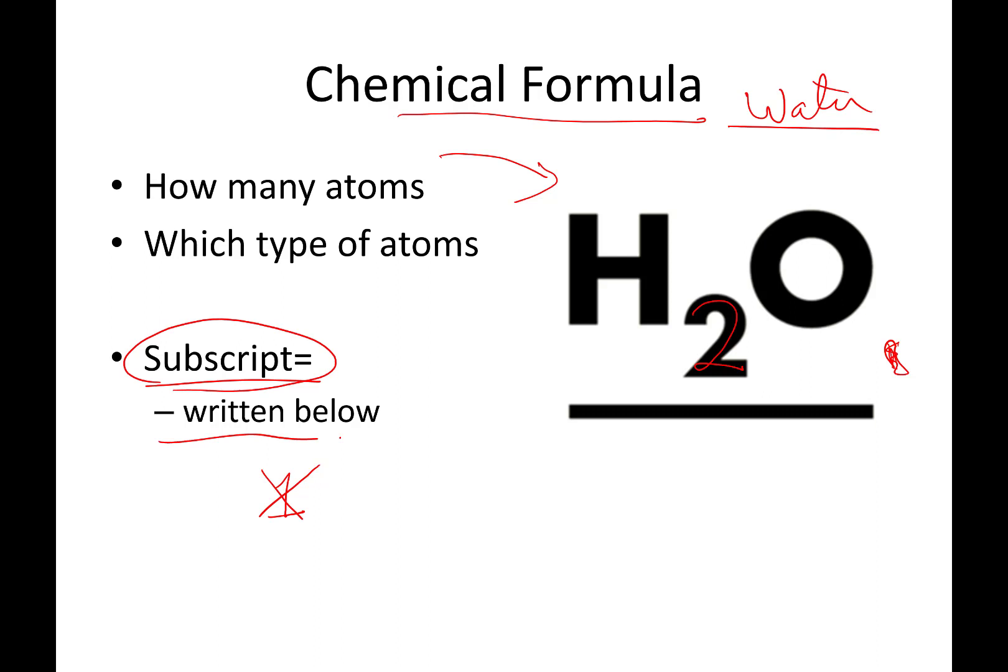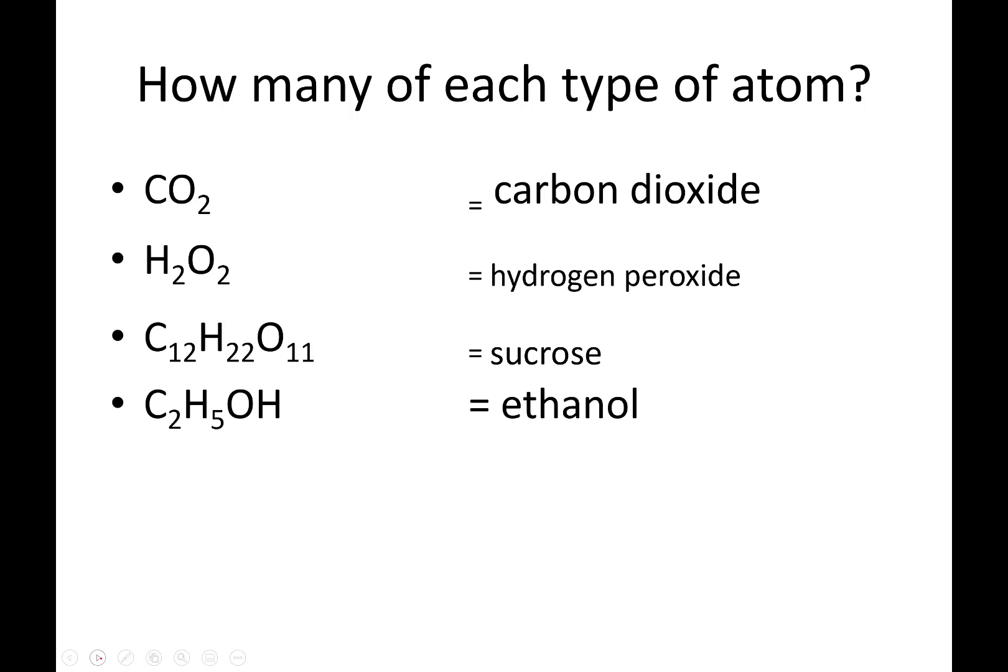So subscripts are little numbers that are written below. Sub meaning below. Script mean writing. And this says that the recipe for water is two hydrogens and one oxygen. Those are the elements that make this up. So if we look at some other compounds, let's take a look at carbon dioxide. Carbon dioxide is one carbon and two oxygens. There is nothing written below the carbon. We never write ones as subscripts in chemistry. But there is an implied, just this symbol says there is one of those. And if there's more than one, then we add a subscript or some other notation.